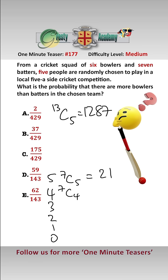If we had four batters then we need to pick four batters from the seven and multiply that by one bowler from the six possible bowlers and that equals 35 times 6 which is 210 possibilities.